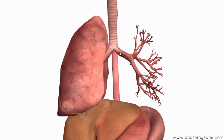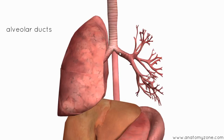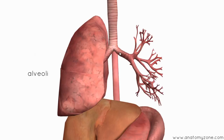The bronchi just keep dividing and they end up in bronchioles, which are smaller and lack cartilage. These bronchioles eventually form alveolar ducts, which lead to alveolar sacs and form alveoli, which are responsible for gaseous exchange. The alveoli have a huge surface area for diffusion, a rich blood supply, and are very thin — but we'll talk about that in another tutorial.